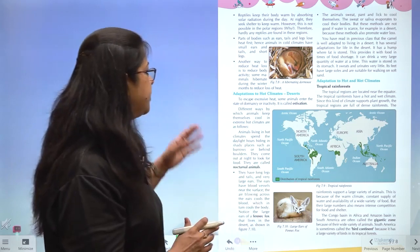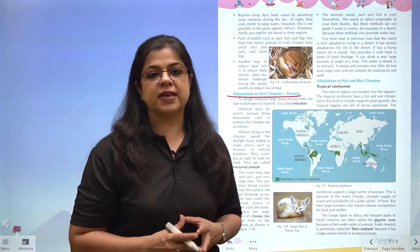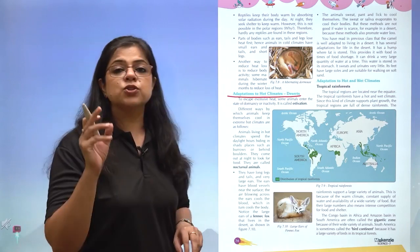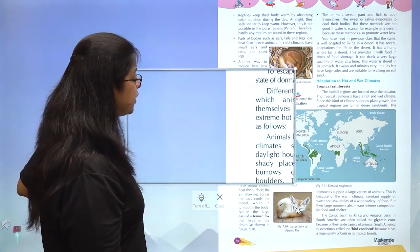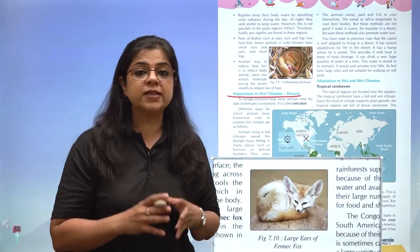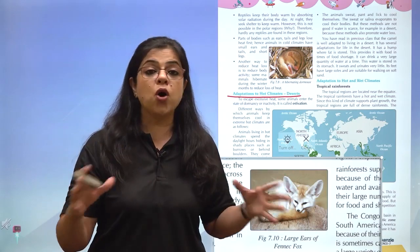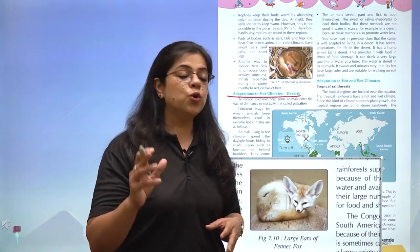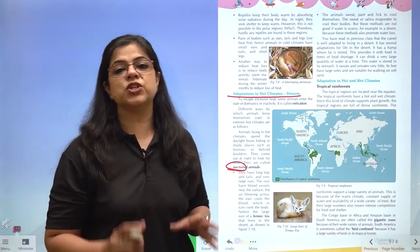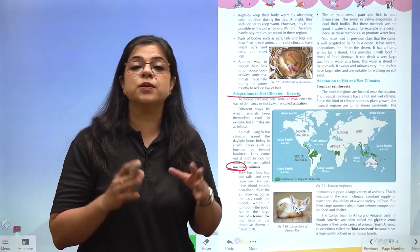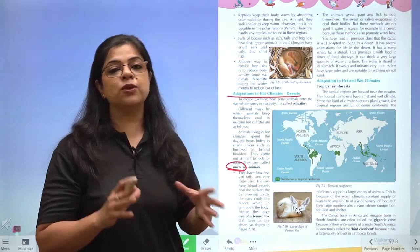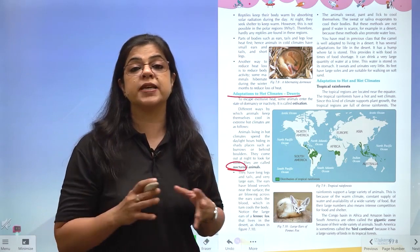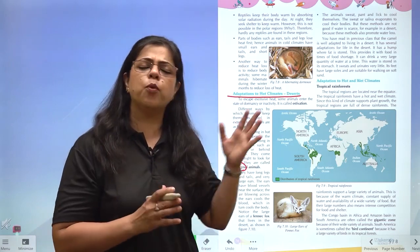Ab iska bilkul ulta ho jata hai - hot climate, deserts ke andar. Desert ke andar bohut tez garmi hai. Cold climate animals mein we saw that ears, tails, and legs were very short so that the body does not lose heat. Yahaan pe heat already bohut zyaada hai and the animal needs to lose that heat, so they have very long ears, very long legs, and a very long tail. Hot climate ke animals nocturnal animals hote hain - meaning they are active at night, raat ko bahar aate hain jab weather thoda sa kam garam hota hai, and at that time they look for food. Kyunki desert hai, is liye yahaan pe food aur kam hoga. These animals also have a very sharp sense of hearing and smell, ta ki yeh khane ko bohut door se locate kar sakein.